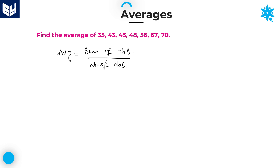Sum of observations means you will add all these numbers. In the denominator, how many observations are there? How many values are given? That is 1, 2, 3, 4, 5, 6, 7 — total 7 values. So the denominator value is 7 and the numerator value is the sum of all those 7 numbers. That will give you the average.